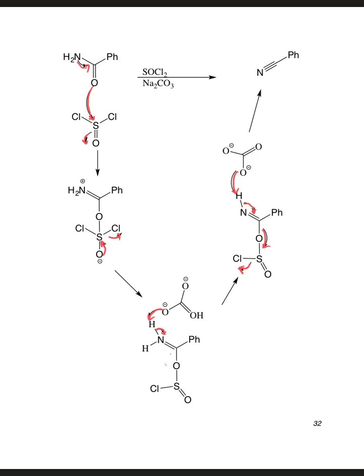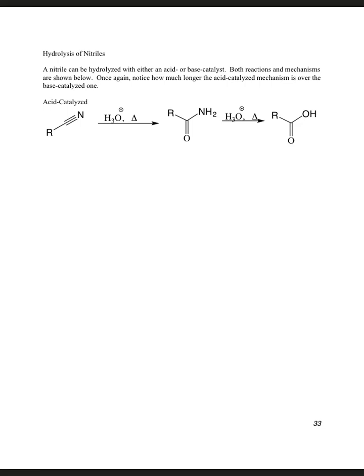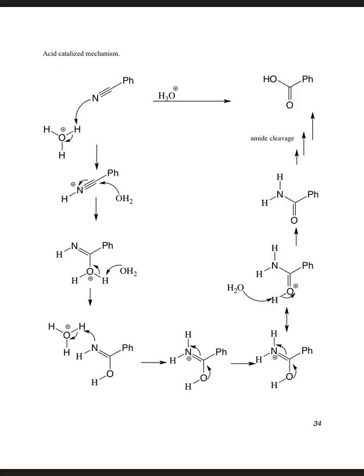So there's that mechanism for making the nitrile. So we can cleave a nitrile with acid catalyzed, acid and heat. It goes through the amide and keeps going to the carboxylic acid. The mechanism is shown on the next page. With it being acid catalyzed, it's a lot longer than the base catalyzed mechanism.